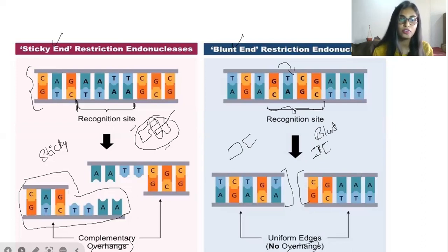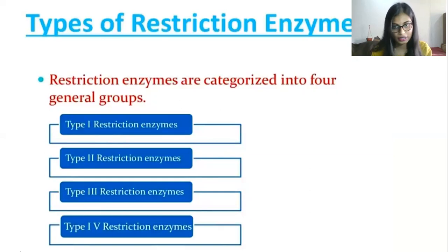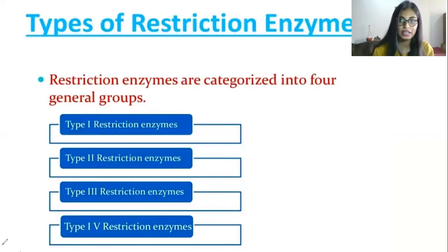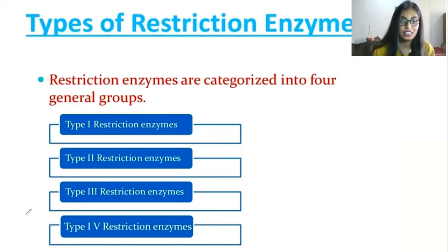There are generally four types of restriction endonucleases: type one, type two, type three, and type four. These four different restriction enzymes have different functions and different cofactors. We will now discuss them one by one in detail.